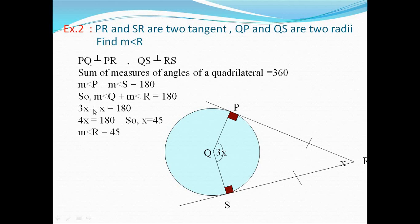So 3X plus X equals 180. We can add 3X plus X to get 4X. Therefore 4X equals 180. Dividing both sides by 4 gives X equals 45. Now we know X is 45, so measure of angle R equals X equals 45 degrees. For angle Q, which is 3 times X, we substitute X equals 45 to get 3 times 45, which equals 135 degrees.